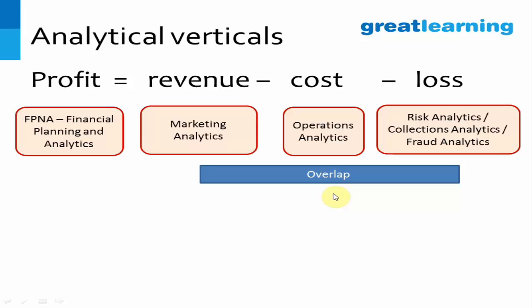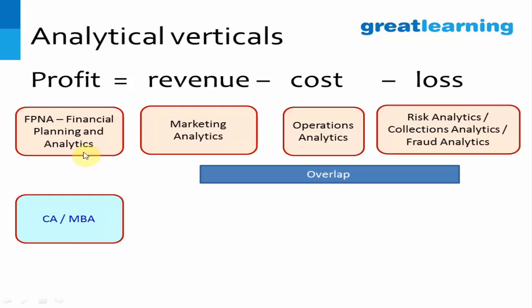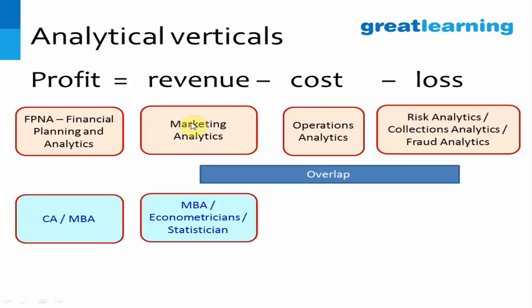In terms of skills required: in FP&A, you'll find mostly CAs and MBAs, as this requires going through numbers and making sense of them. In Marketing Analytics, you'll find MBAs, econometricians, and statisticians, because here you actually develop logistic regression models, classification trees, and similar techniques.